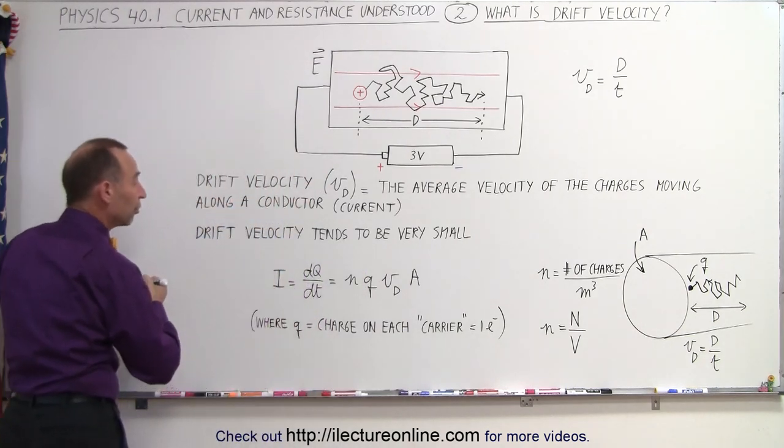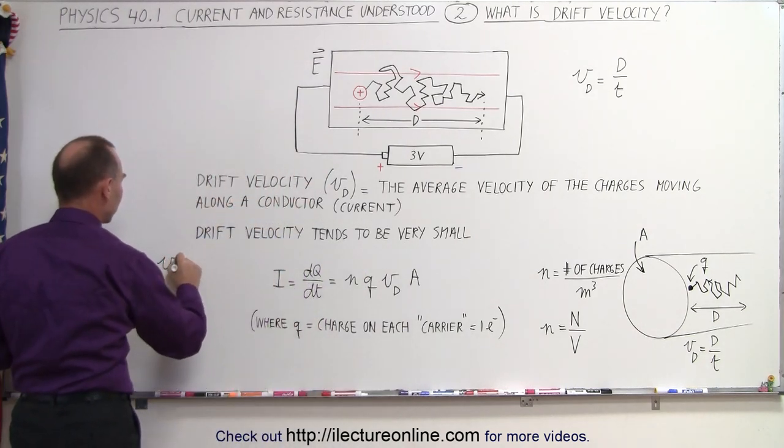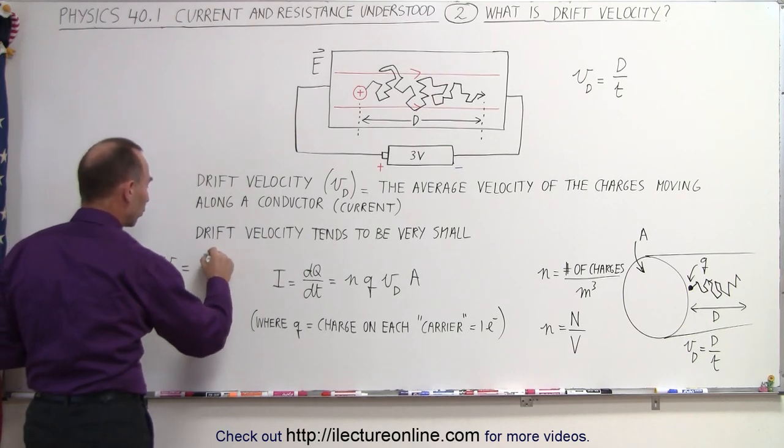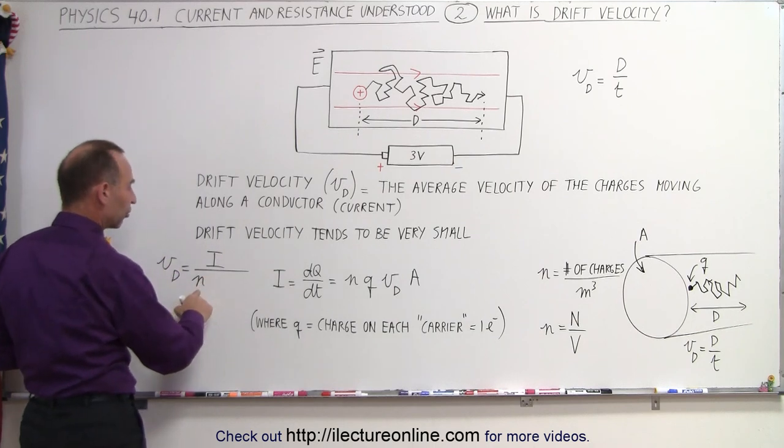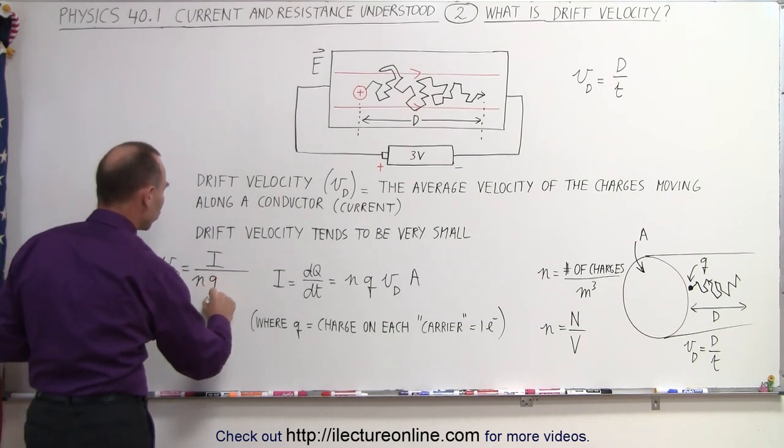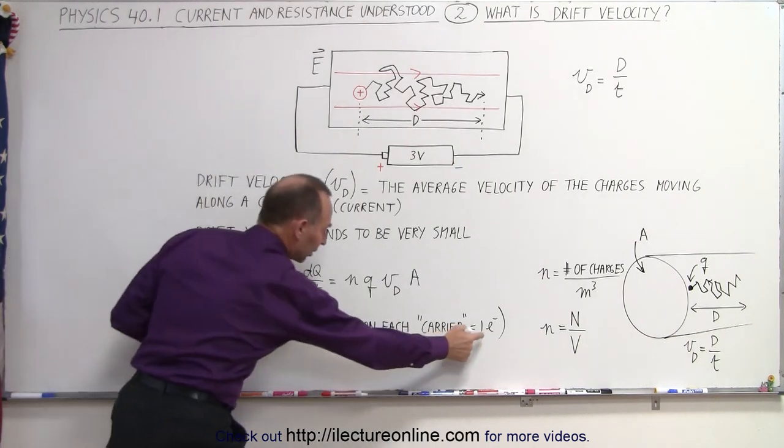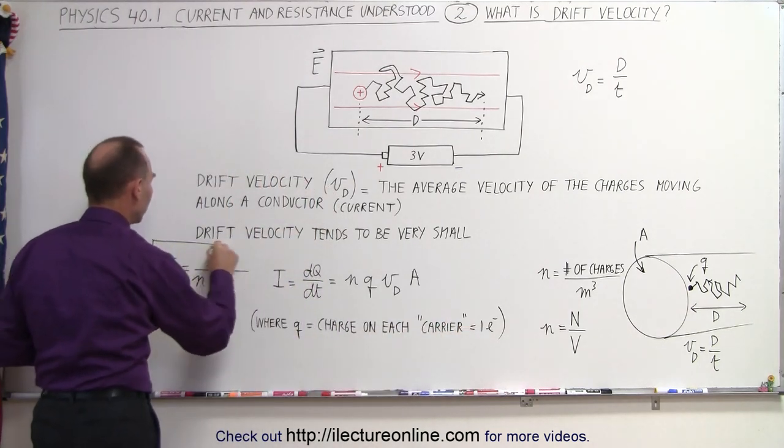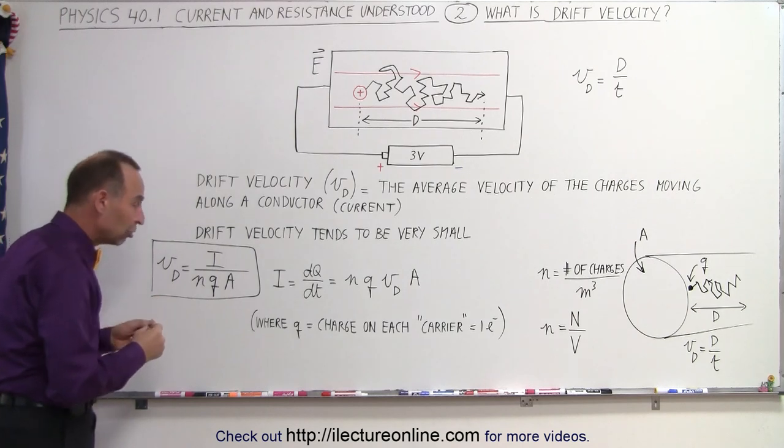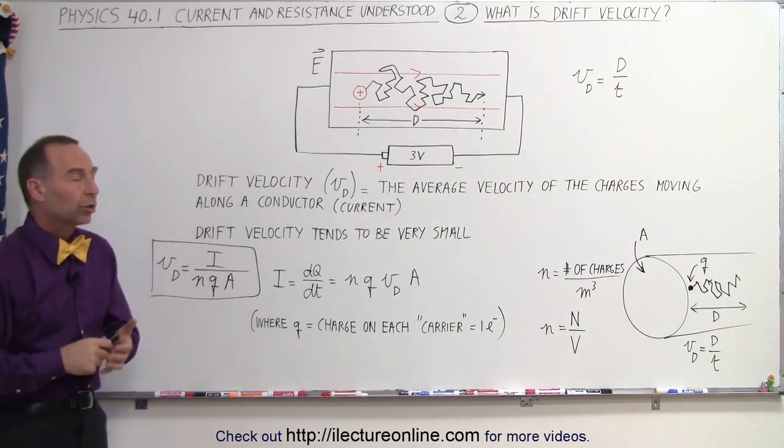So, if you want to solve that for the drift velocity, you can then say that the drift velocity is equal to the current through the conductor divided by the number of charge carriers per unit volume, the charge on each carrier (which would be a single electron), times the cross-sectional area. And this will give you how fast the charges are actually moving through the conductor.